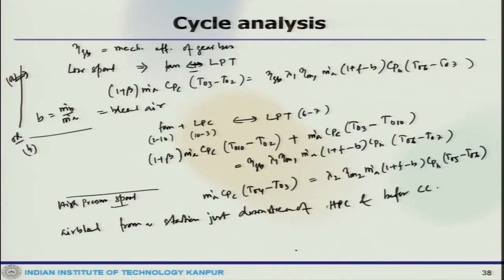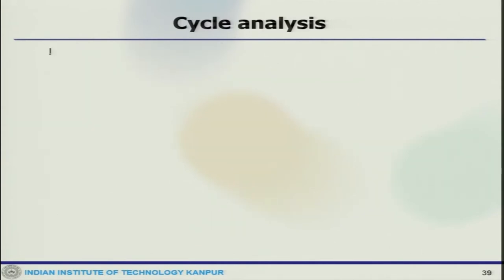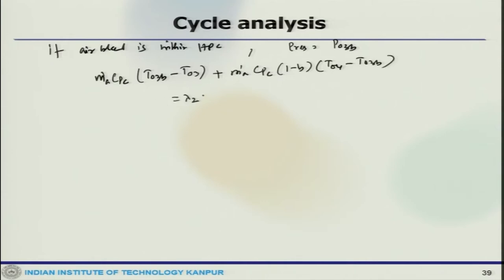In the other case, if the air bleed is from a station within the HPC, then the pressure would be identified as P03B. The energy balance of the high pressure spool would give: M_dot_A * Cp_c * (T03B-T03) + M_dot_A * Cp_c * (T04-T03B) = lambda_2 * eta_M2 * M_dot_A * (1+F-B) * Cp_H * (T05-T06).